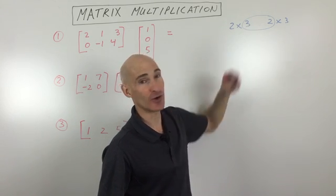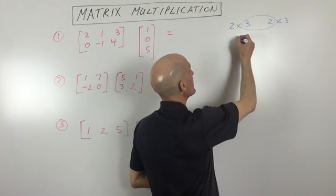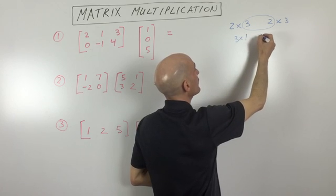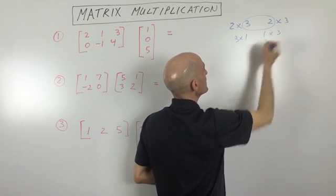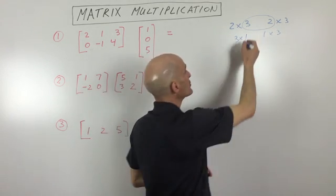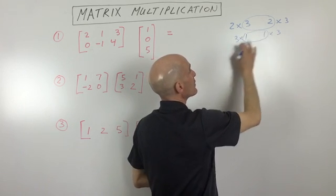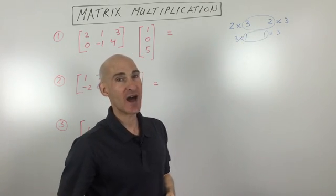So this actually is not possible. Let's look at another example. Say you had a three by one times a one by three. No problem. Here you can see that these ones are going to match. You're going to end up with a three by three, three rows, three columns.